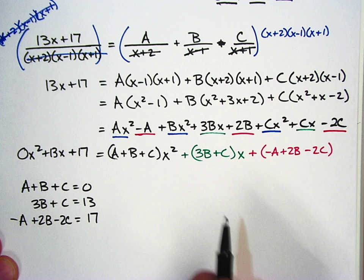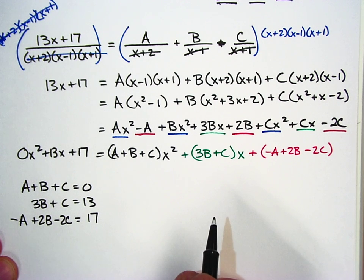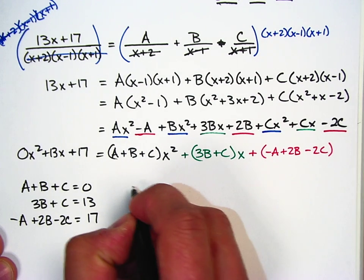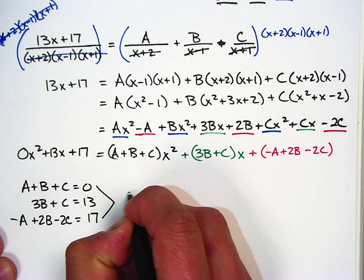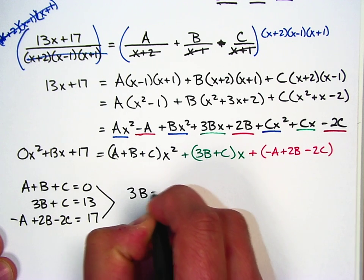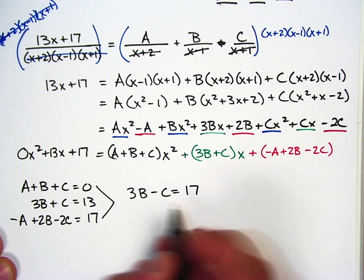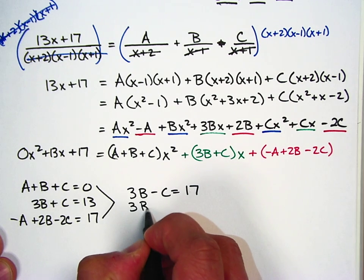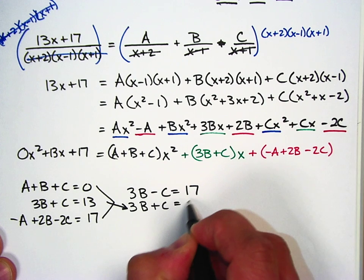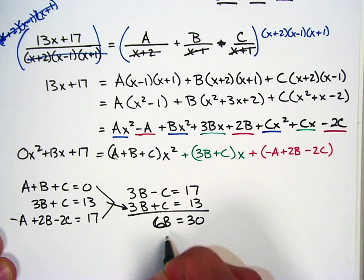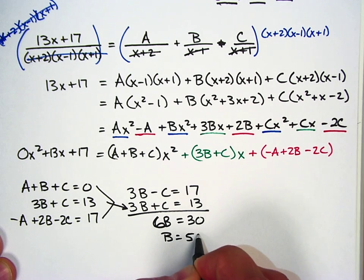You can solve this system using a matrix if you want, or we can do it algebraically. I'm going to go ahead and just do it by hand because the A's easily cancel. And if I did that, I would get 3B minus C equals 17. And I also have 3B plus C equals 13. That's going to give me 6B equals 30. B equals 5.